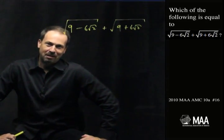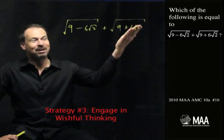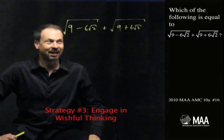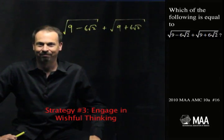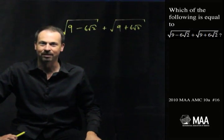What I'm going to do here is engage in strategy number 3, which is engage in wishful thinking. Of course, what my fear is really about is those square roots. I kind of wish they weren't there. That's a good strategy. I wish they weren't there.